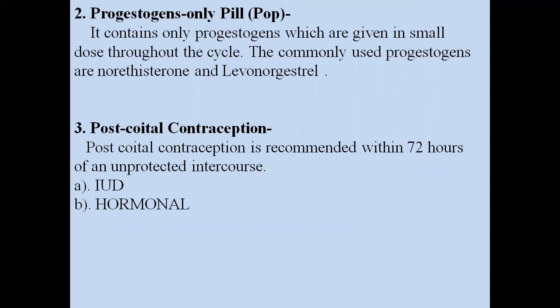The progesterone-only pill differs from combined oral contraceptive pills. It contains only progesterone given in a small dose throughout the cycle. Commonly used progestogens are norethisterone and levonorgestrel. Post-coital contraception is recommended within 72 hours of unprotected intercourse, and both IUD and hormonal contraceptive pills can be used as post-coital contraceptive methods.